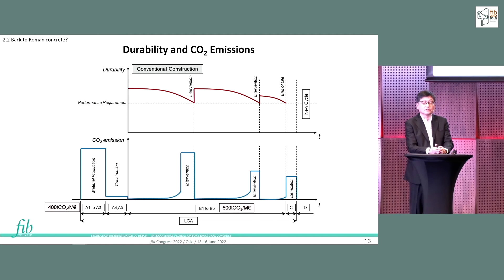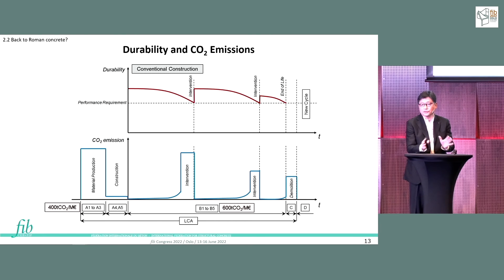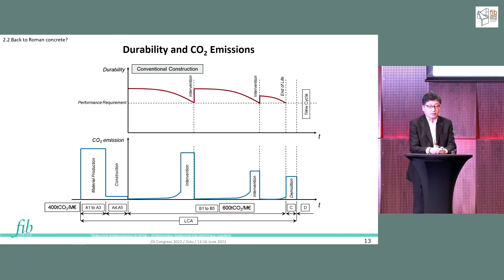This is a very simple concept of how CO2 is emitted in each process of the supply chain. At the beginning, materials emit a lot. Construction itself is not so big a problem. After construction, each intervention emits CO2 the same as construction — a couple of times. I put some numbers: 400 tons per million euros for the material stage, and about 600 tons per million euros for the use stage. This is based on a database from UK researchers.